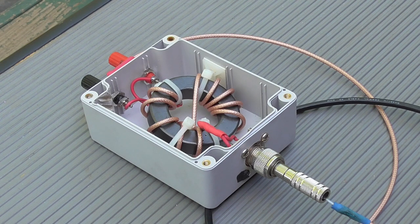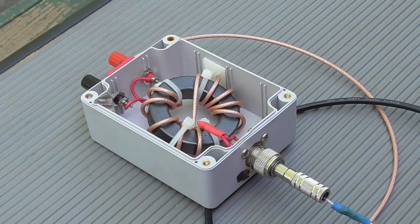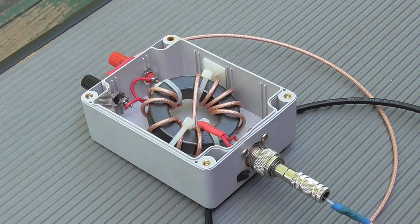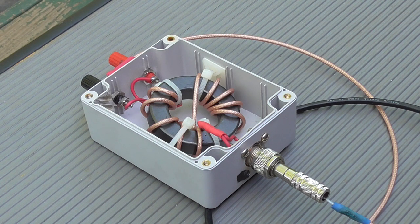In part one of this video, we built a 1-to-1 current balun using our type FR31 ferrite material. I've had the balun in use on a 10-meter dipole for the last month, and everything seems to be working just fine.